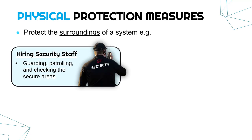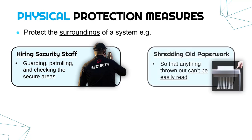One common physical measure is having security staff who are guarding certain rooms, patrolling, checking for intruders, and generally checking on your secure areas. They can challenge anyone who shouldn't be there, remove anyone who shouldn't be there, and just check things are locked up and safe.